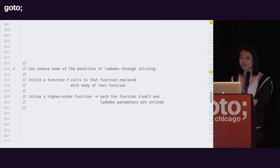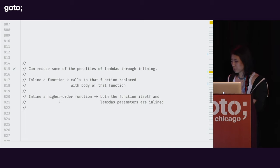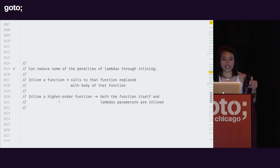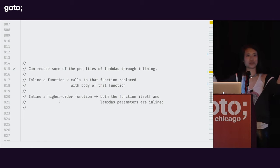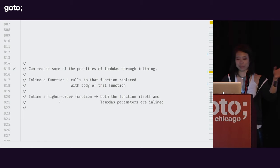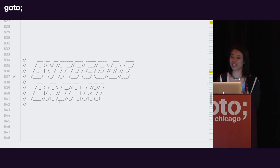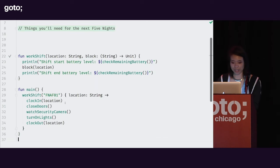There are some things you can do to counteract some of these penalties of lambdas, and that's through inlining. Inlining a function in Kotlin means you take the body of that function and copy and paste it right into the call site. You can actually inline higher-order functions, and that copy-pastes both the function body itself as well as the function body of any lambdas you've passed in. To see what that looks like, we're going to take a bytecode break.